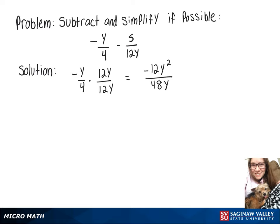Now we're going to take our second fraction, 5 over 12y, and multiply that by 4 over 4, leaving us with 20 over 48y.